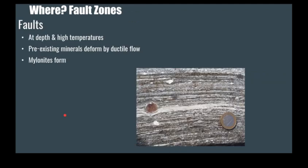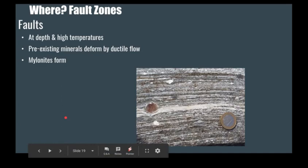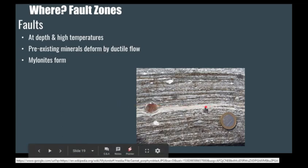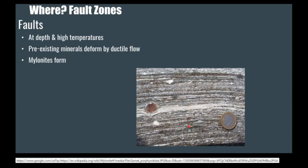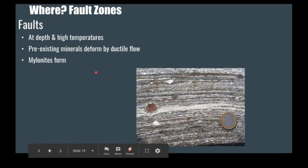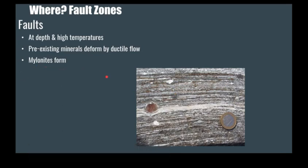Where else can you get metamorphism? Fault zones. These can be at depth and involve significantly high temperatures. Faulting can shear, spread out, and pulverize your rock to such an extent that you get rocks with really tiny particles that are aligned, with little features from shearing and being pulled apart. You'll see little fissures throughout the rock, creating beautiful metamorphic rocks. Mylonites are common in these fault environments.